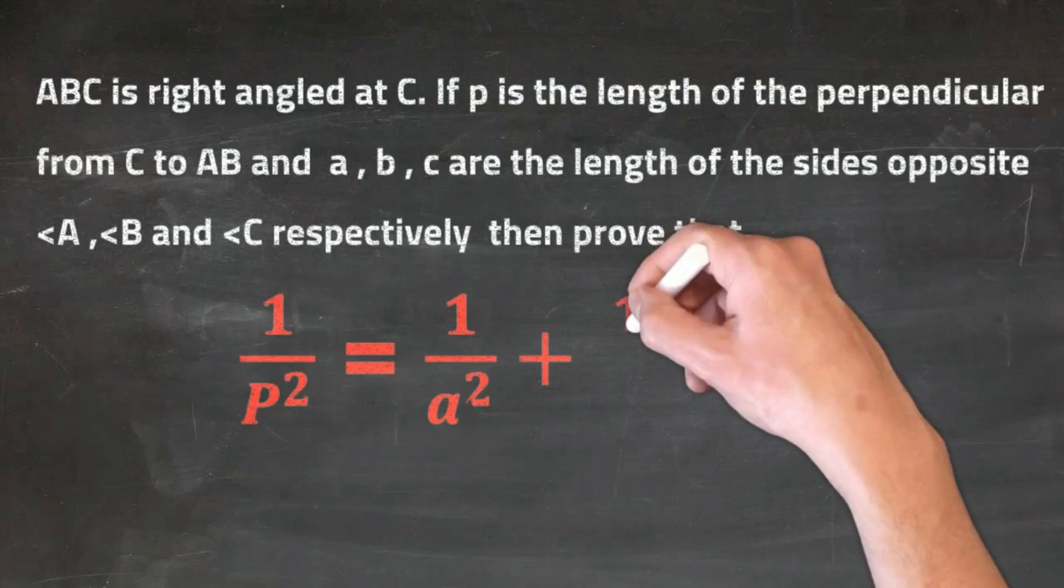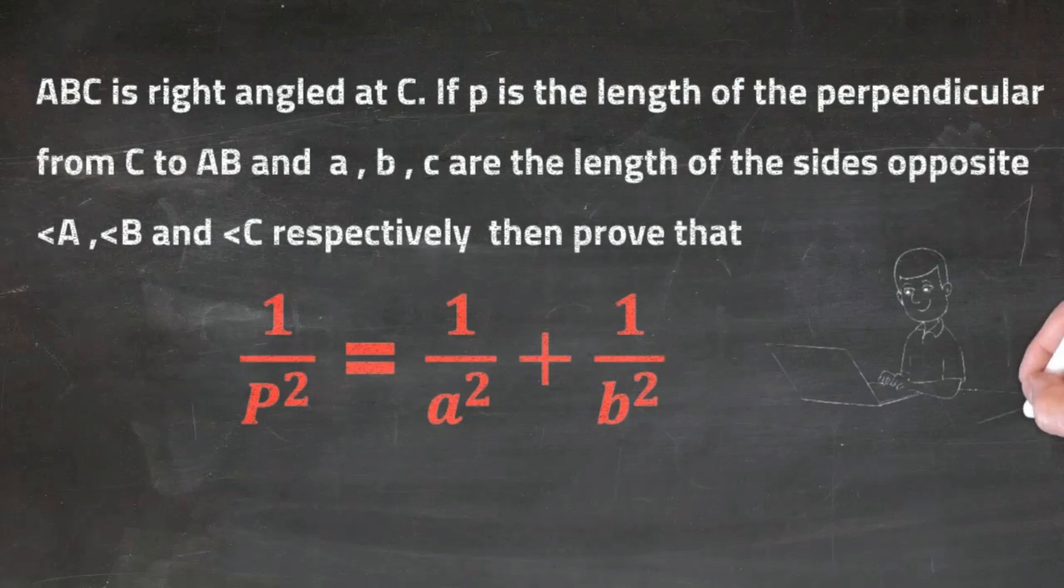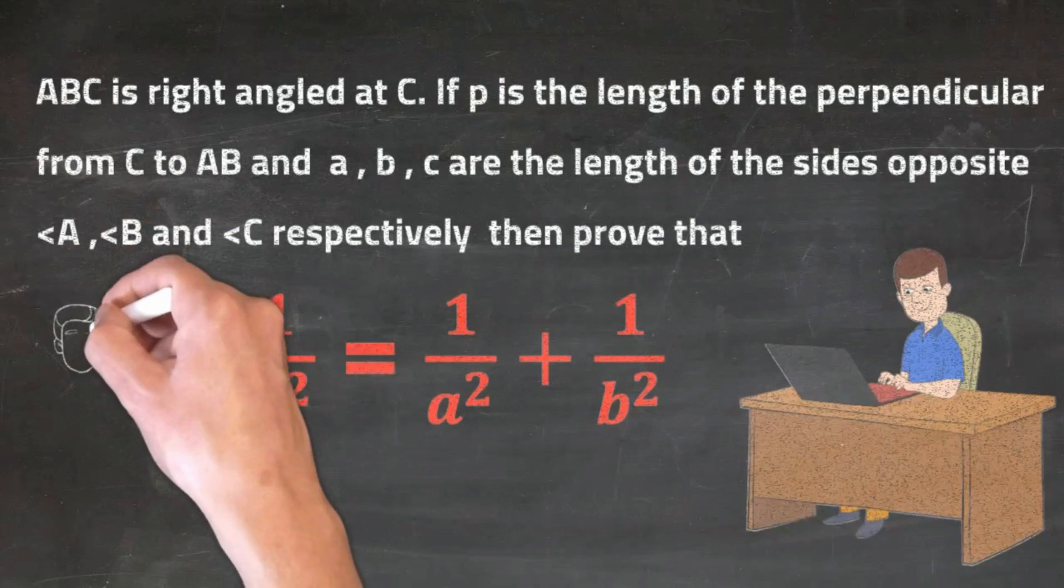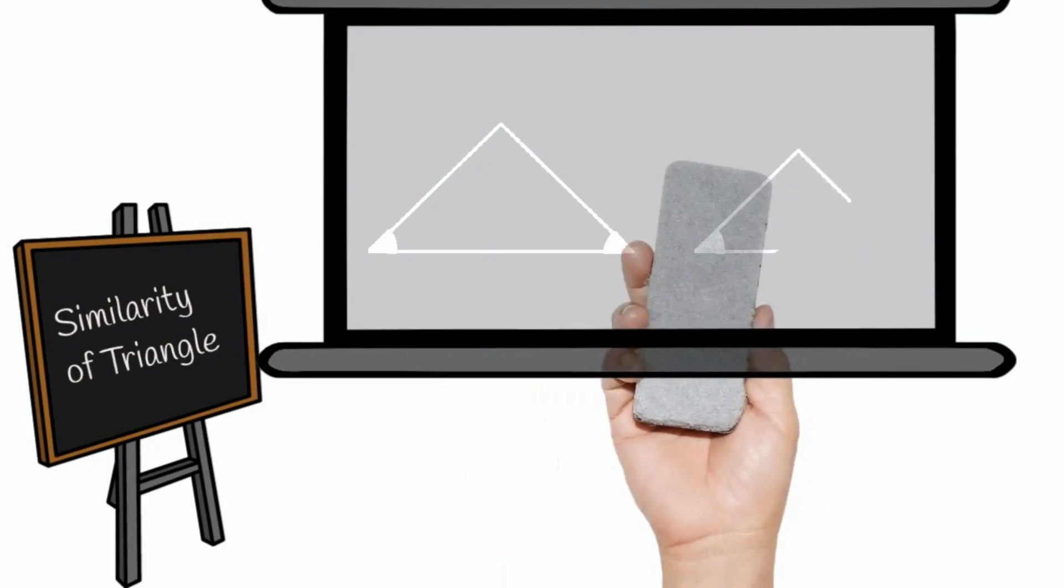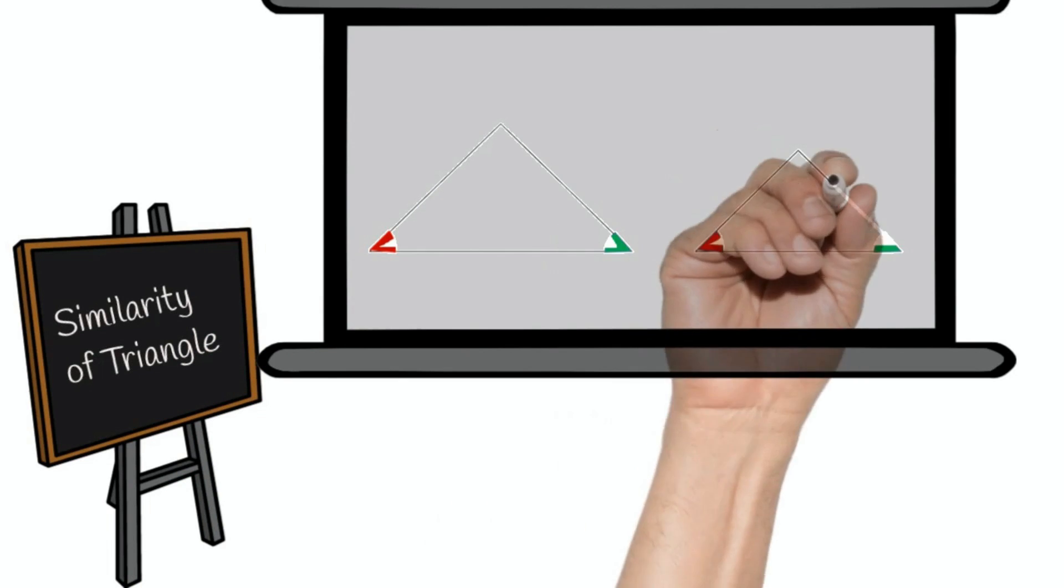1 by P square equals 1 by A square plus 1 by B square. Hello friends, welcome to the video. One of the important board exam questions, let's see how to solve.